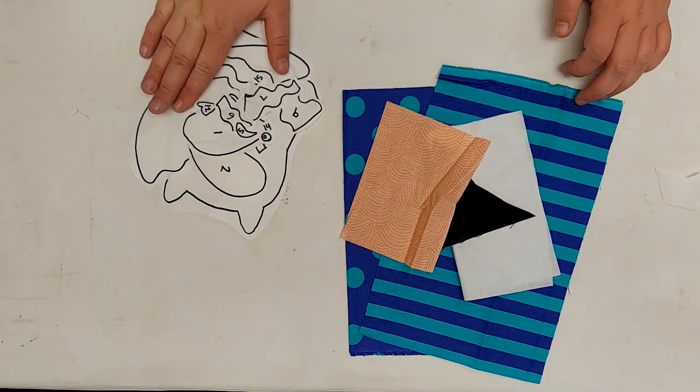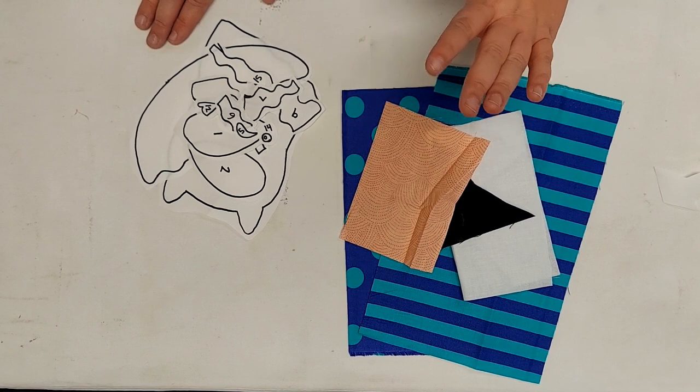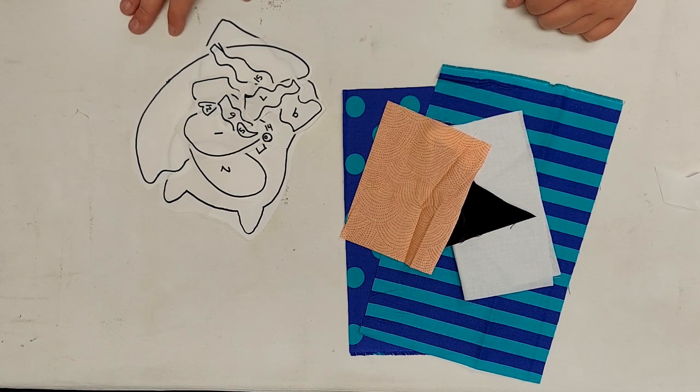Now that I've got all of my templates traced and cut out and numbered, I'm going to pair them with their fabrics and fuse them to the wrong side of the fabric. Once again, pressing and holding for 10 seconds on your highest heat with no steam.